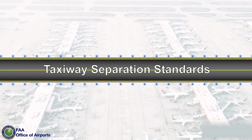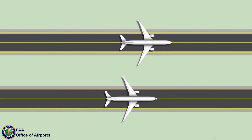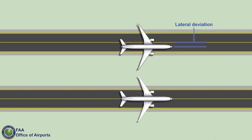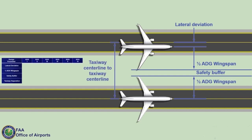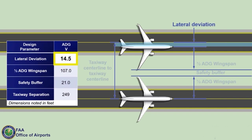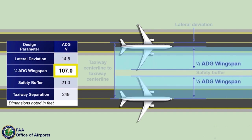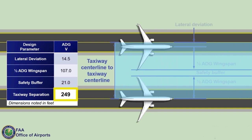For separation standards between parallel taxiways, the FAA establishes taxiway separation as follows: one of the two aircraft deviates from the taxiway centerline while the other aircraft remains on the centerline. The taxiway separation distance incorporates the ADG wingspans, a lateral deviation distance, and a safety buffer distance, resulting in adequate wingtip clearance between the two aircraft. This example shows two ADG-5 taxiways with a lateral deviation of 14.5 feet, half the ADG wingspan of 107 feet for both aircraft, and a safety buffer of 21 feet, resulting in a taxiway separation distance of 249 feet.